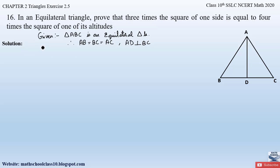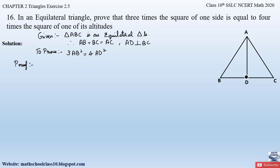Now let us write down what we have to prove. Three times the square of one side — let us take side AB — so three times AB² will be equal to four times the square of one of its altitudes. The altitude here is AD, so we have to prove 3AB² = 4AD².